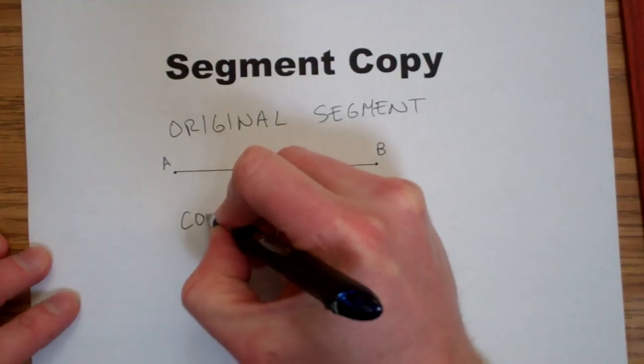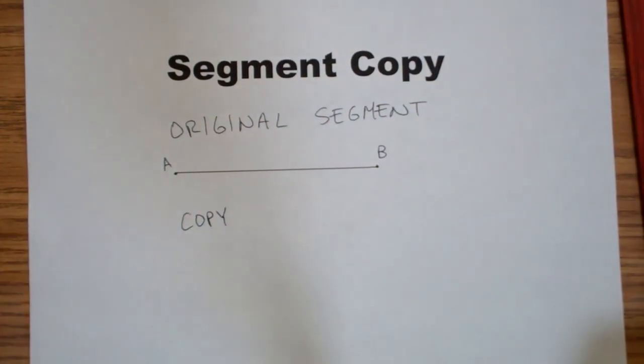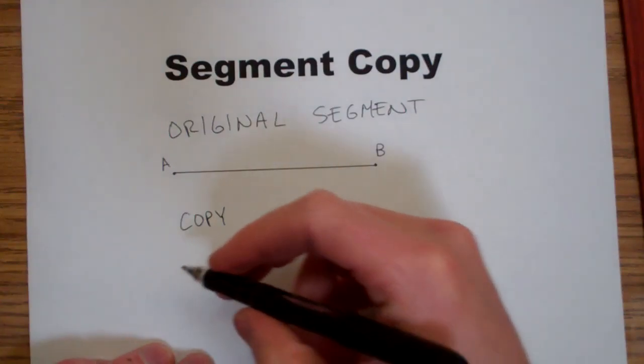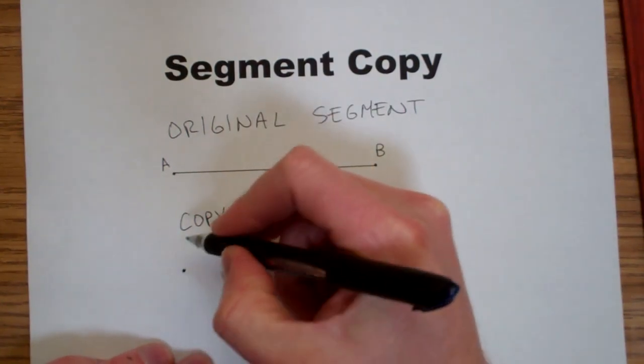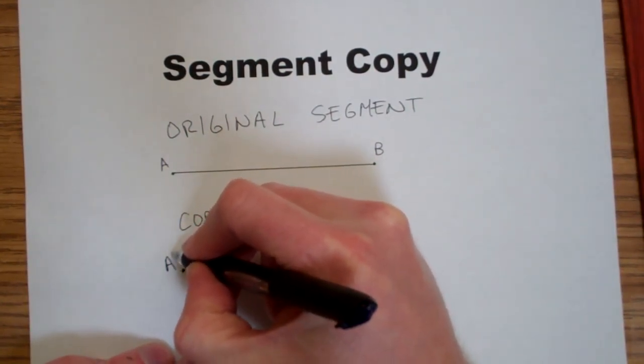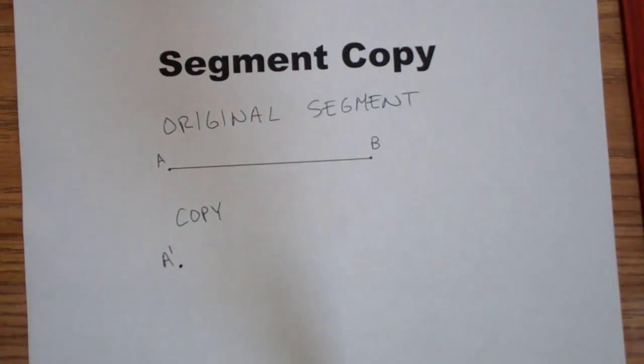Below that, we're going to construct the copy. We'll start by translating point A down and labeling it A prime.